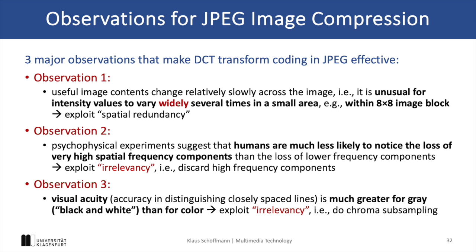The second observation is that humans are less likely to notice the loss of high spatial frequencies, which means that we can discard them via quantization. And finally, humans are also much more sensitive to brightness or luminance changes, and less sensitive to missing color information, which means that we can reduce the fidelity of chroma components with color subsampling.